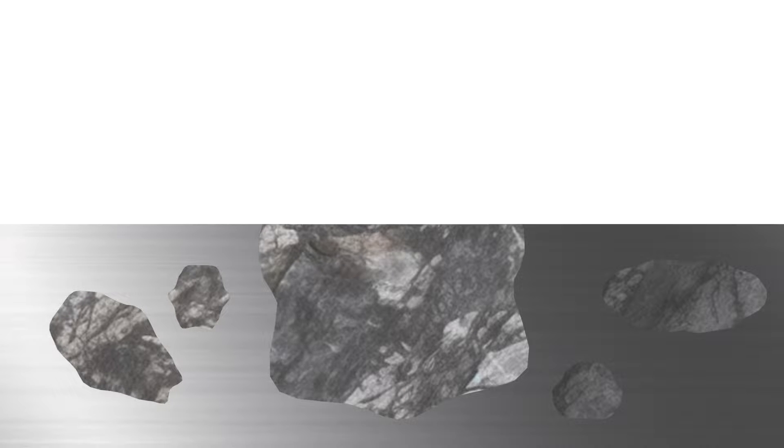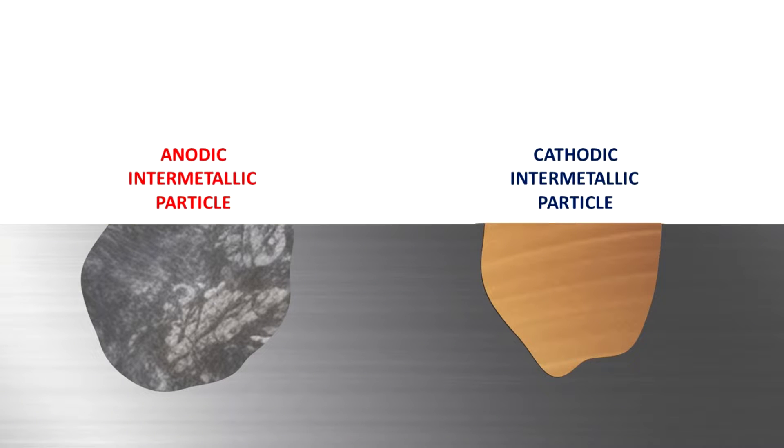The primary causes for dealloying lie in its microstructure, which is achieved through thermal treatments to enhance the mechanical properties of an alloy. Some of these intermetallic particles may be more reactive to the corrosive environment, which causes them to corrode at an accelerated rate. Furthermore, these intermetallic particles may also form a galvanic couple with the surrounding alloy, which leads to the rapid corrosion of the anodic part in this couple, leaving the cathodic part intact.